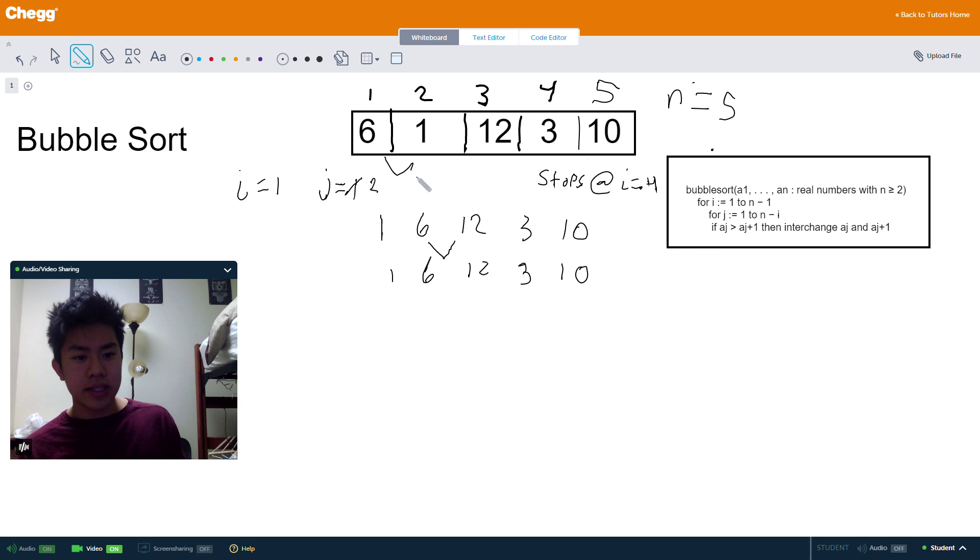And then we're going to go back to this loop, the nested one. j is now 3. Now we compare these two. Is this one greater than this one? Yes. Now we swap them.